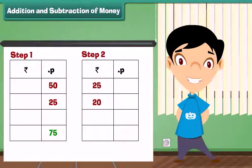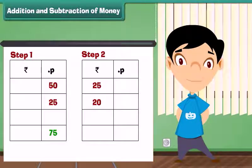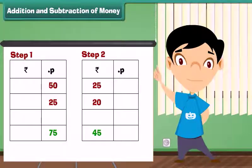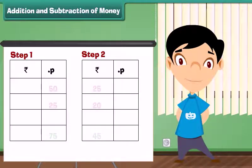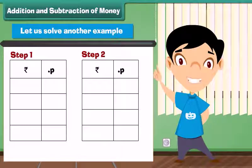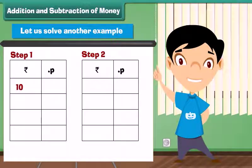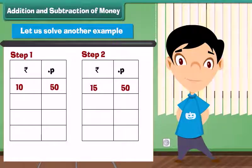Step 2: Add the numbers in the rupees column — 25 plus 20 is equal to 45 rupees. Write 45 under the rupees column. Let us solve another example: what is the sum of 10 rupees 50 paise and 15 rupees 50 paise?